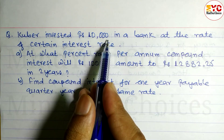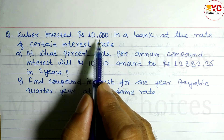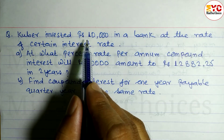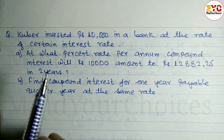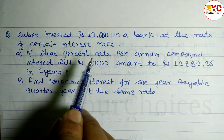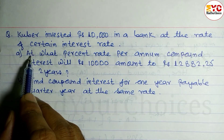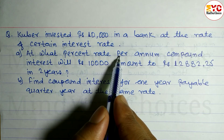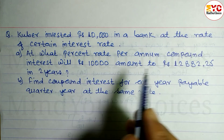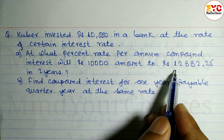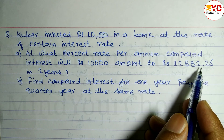Next question: Kubair invested rupees ten thousand in a bank — this is the principal. At what percent rate per annum compound interest will ten thousand amount to rupees twelve thousand eight hundred twenty-two point two five?